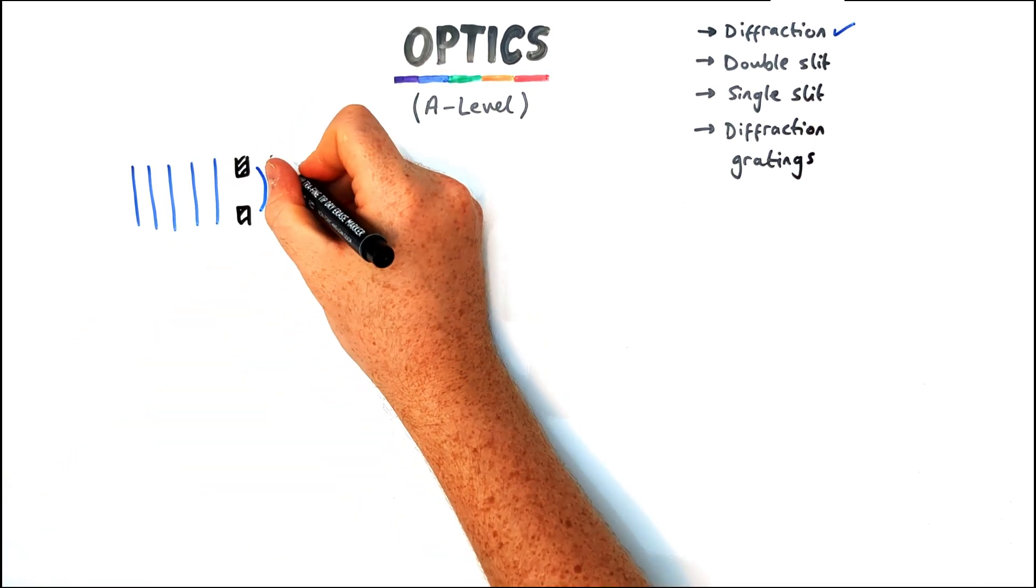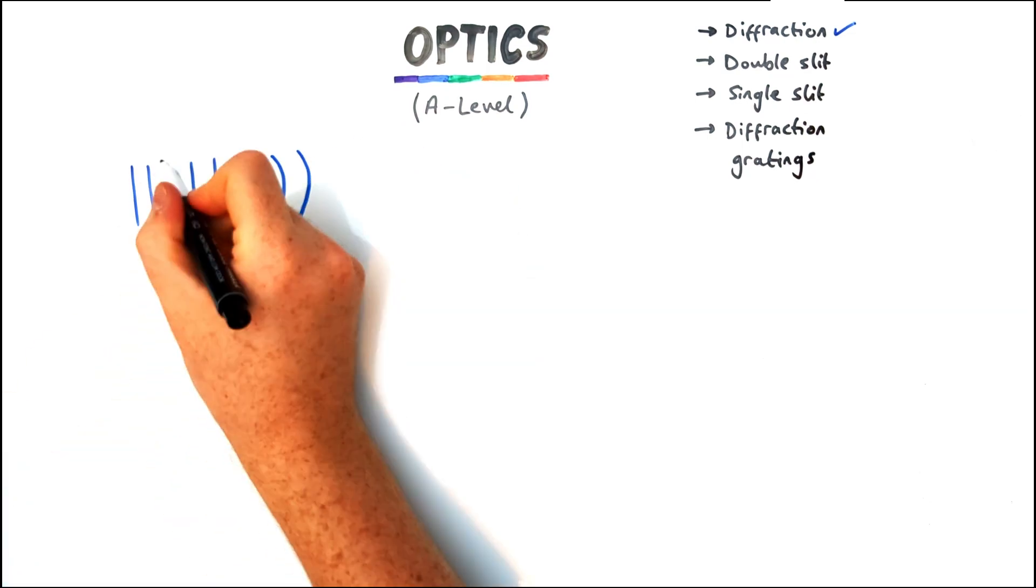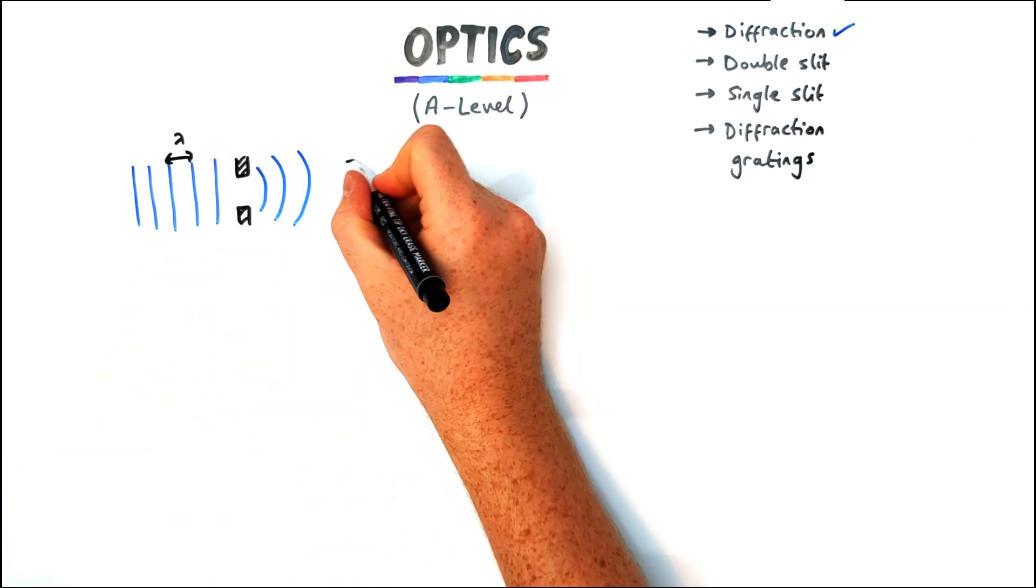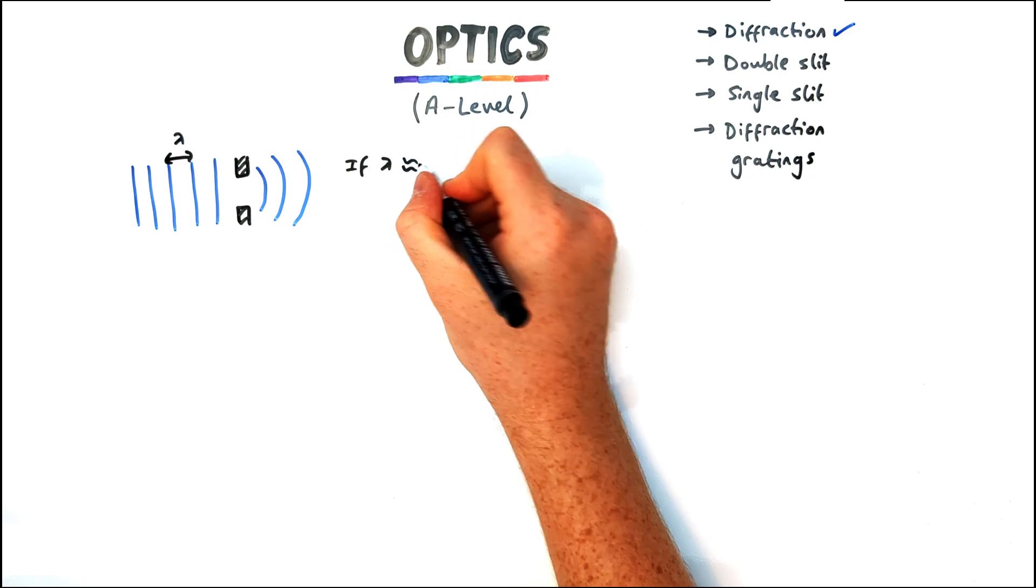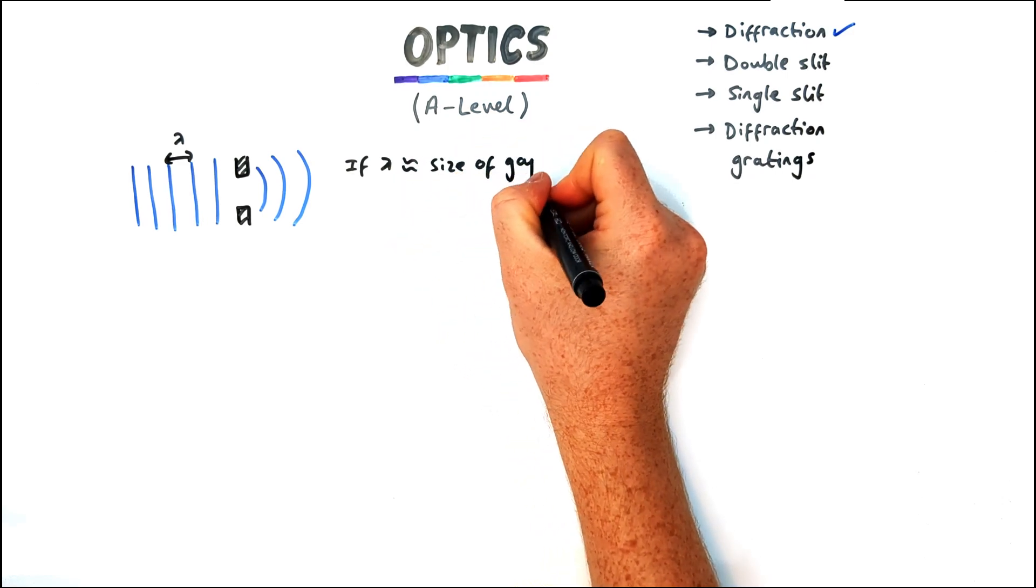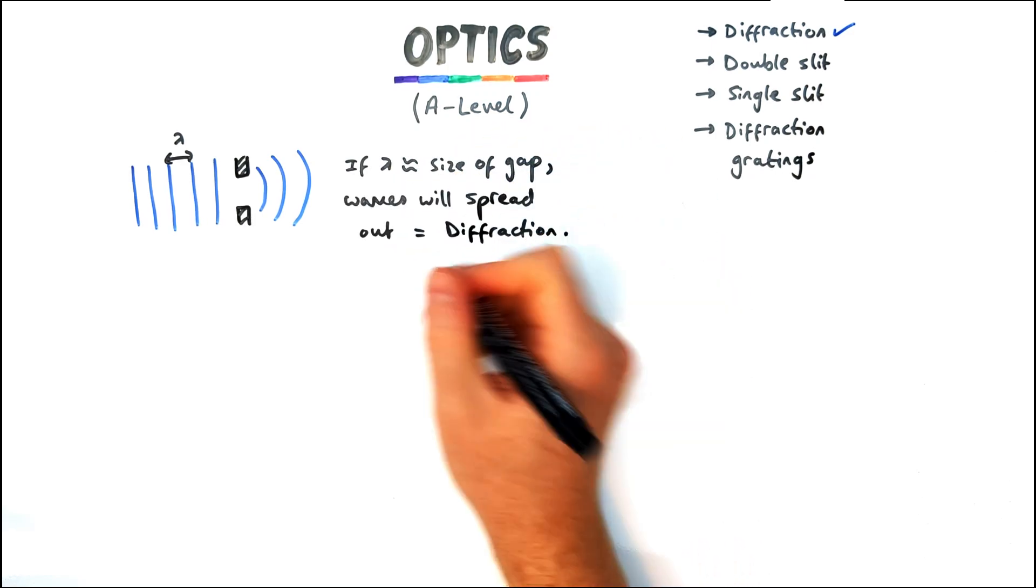So first of all what is diffraction? Well diffraction is when a wave spreads out when it travels through a gap that is similar to its wavelength like in this diagram here. So the gap here is similar to its wavelength so after the gap it will spread out.